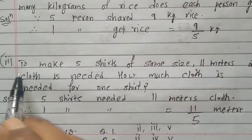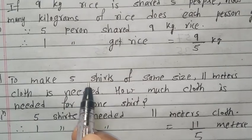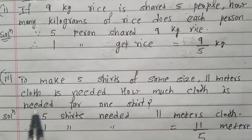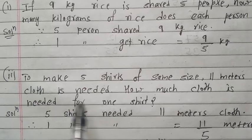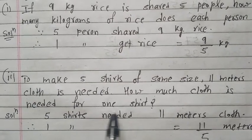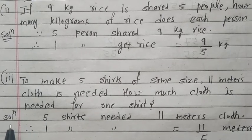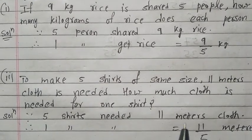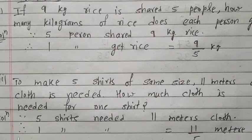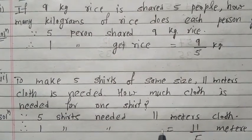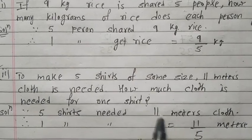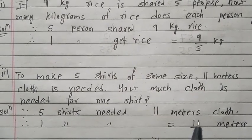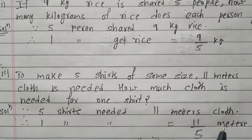Now come to Question Number 2. To make 5 shirts of the same size, 11 meters of cloth is needed. How much cloth is needed for 1 shirt? So how to write? Write down. Since 5 shirts needed 11 meter cloth, therefore 1 shirt needed is equal to this 11 written in the numerator and 5 comes in denominator. That is 11/5 meters.